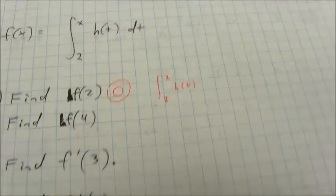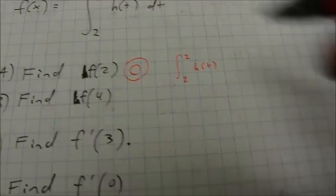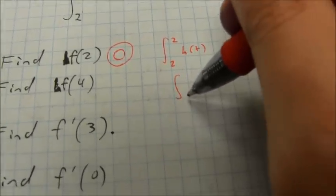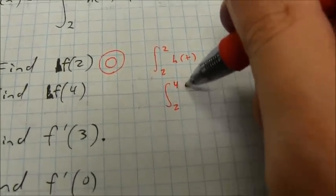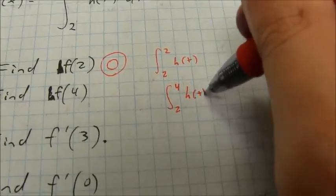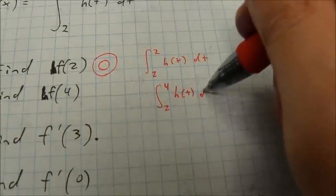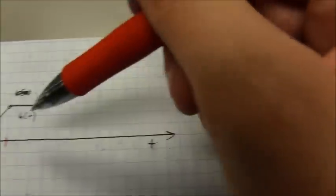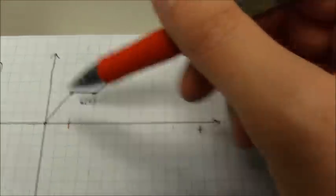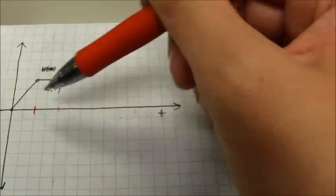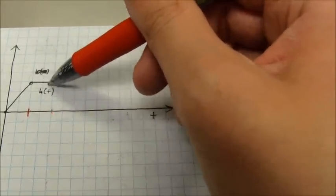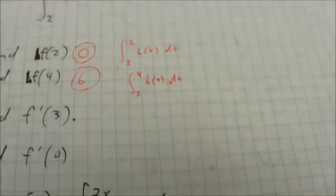So that's my answer on part A. On part B, it's f of 4 — that's going from 2 to 4 of h of t dt, and that's just the area between 2 and 4. I can go to my graph: 2 is here, 4 is right here, and the area is 6. That's my value.